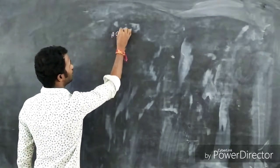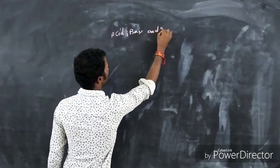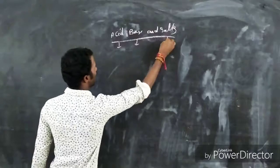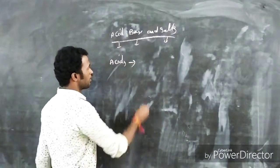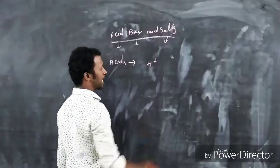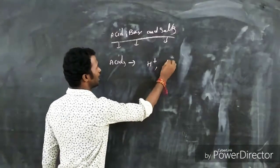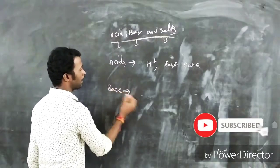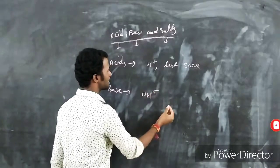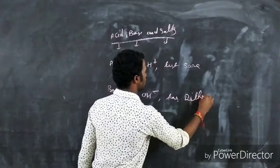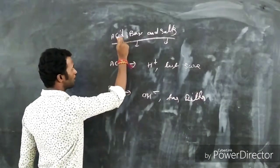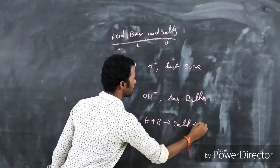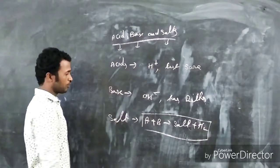Today we will discuss the topic of Acids, Bases, and Salts. First we learn about the terminology. Acids, by hydrolysis, are compounds that release H+ ions. The taste test for acids is sourness. Bases, by hydrolysis, release OH- ions, and the test for them is bitterness. Salts are formed when an acid and a base react, producing salt plus water. This reaction is called neutralization.